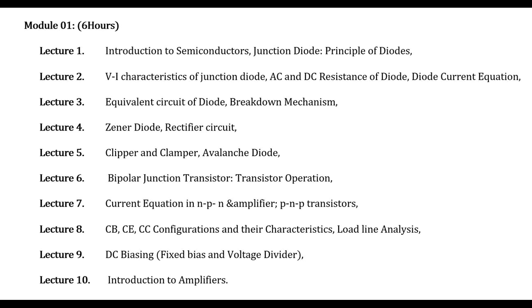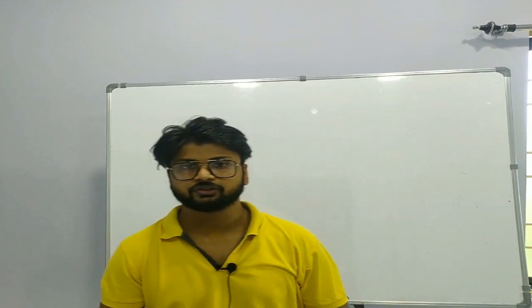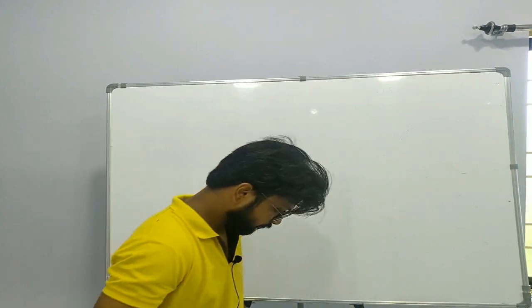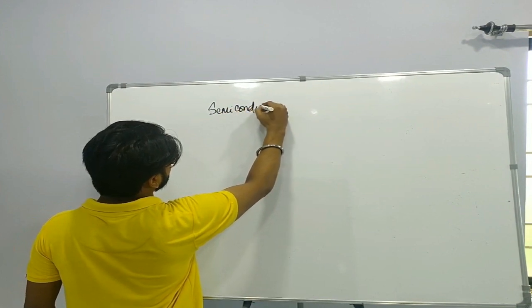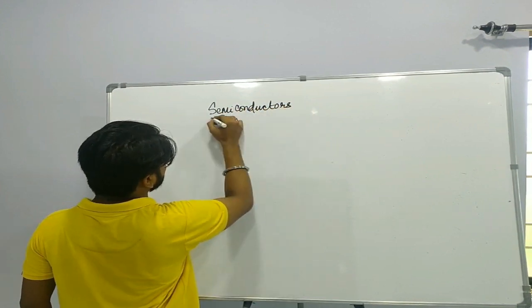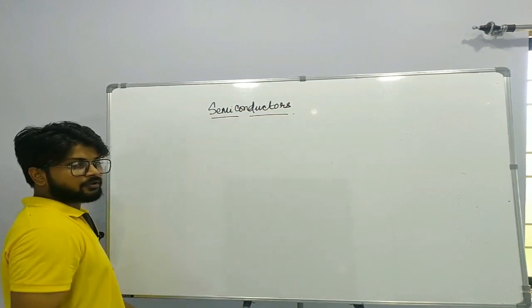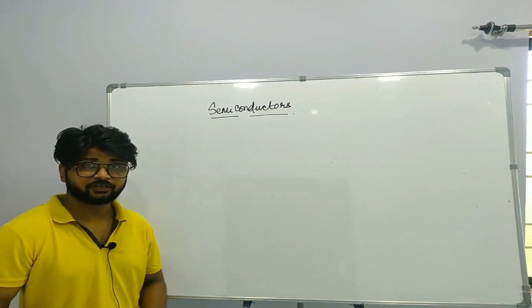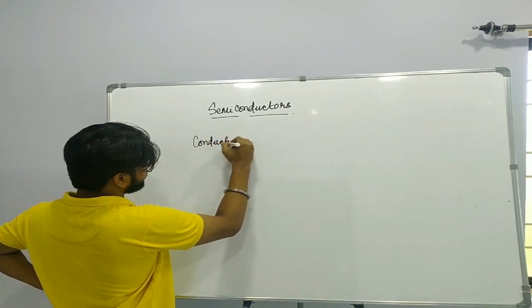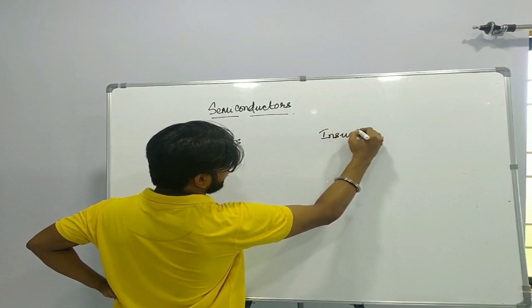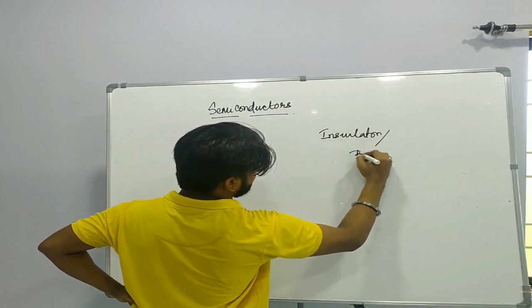Module 1 will be completed in 10 lectures, and the first lecture — introduction to semiconductors and diodes — will be covered in this video. Beginning our first lecture with semiconductors: as you know from your previous classes, there are normally two kinds of materials — one is conductors and the other is insulators or bad conductors.